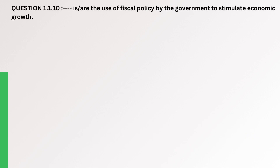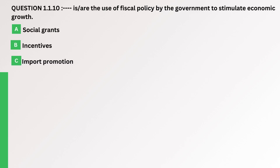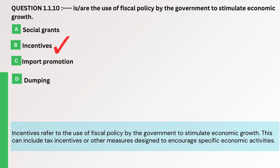Question. What is or are the use of fiscal policy by the government to stimulate economic growth? A. Social grants. B. Incentives. C. Import promotion. D. Dumping. The correct answer is B. Incentives. Incentives refer to the use of fiscal policy by the government to stimulate economic growth. This can include tax incentives or other measures designed to encourage specific economic activities.